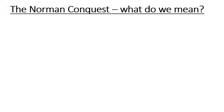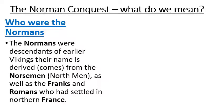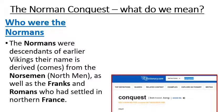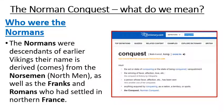What do we mean by the Norman Conquest? Firstly, who were the Normans? The Normans were the descendants of the earlier Vikings, and their name derives from 'Norsemen' meaning 'Northmen', who, along with the Franks and Romans, had settled in northern France. When we talk about conquest, we're talking about the act of taking over someone, conquering them, acquiring anything by strength.